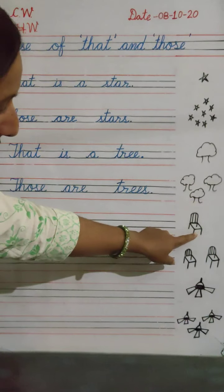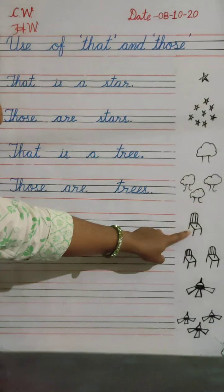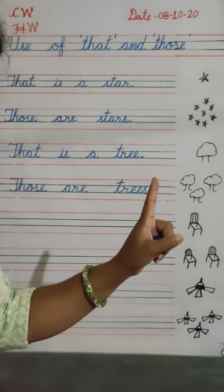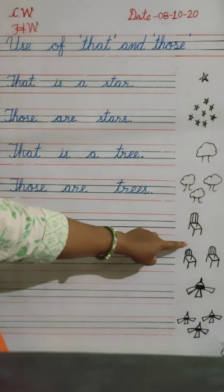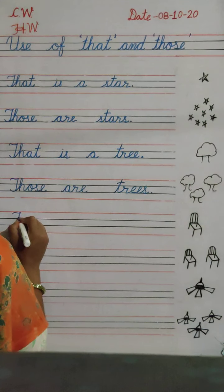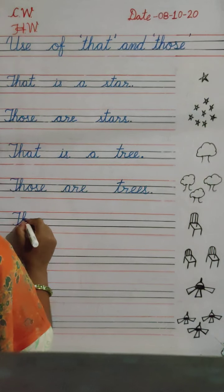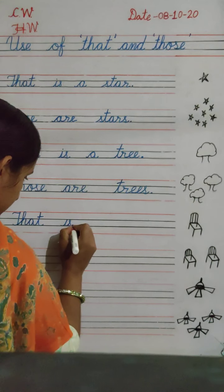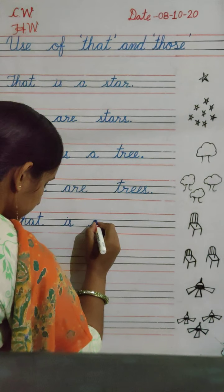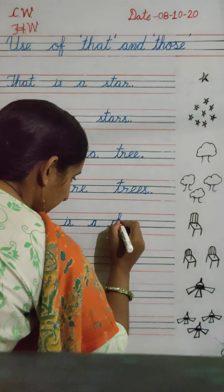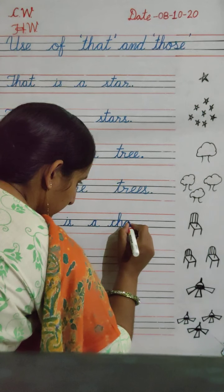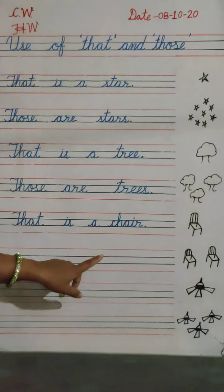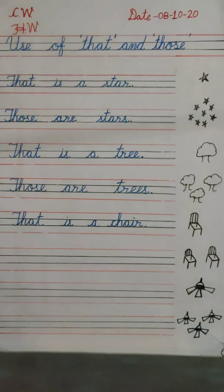Look at the picture. What is that? That is a chair. Because there is one chair, we will use 'that'. That is a chair. T-H-A-T. C-H-A-I-R — chair. Why do we use 'that'? Because there is one chair.